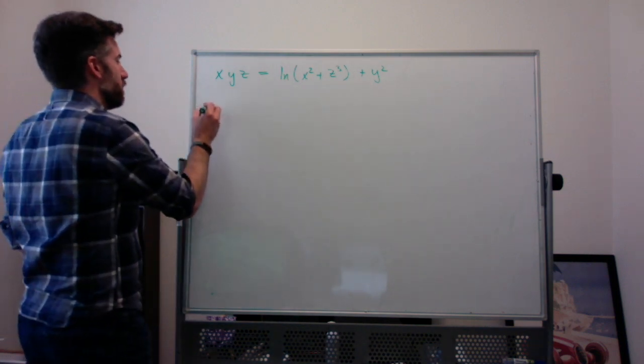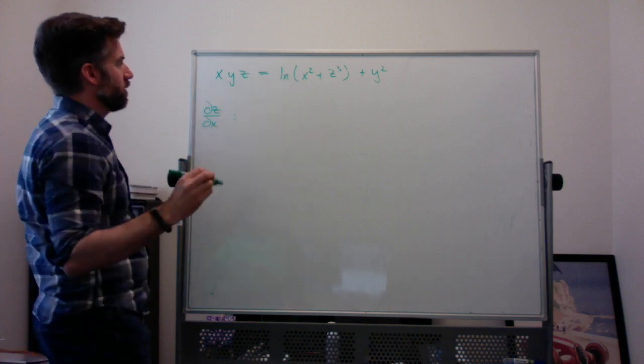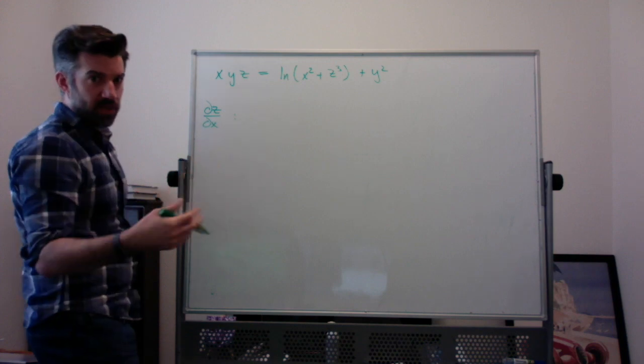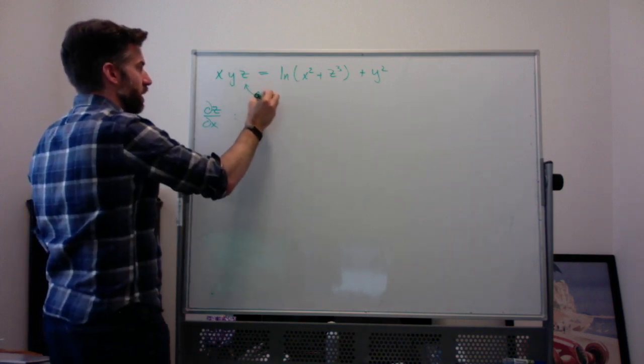So let's do ∂z/∂x. The idea here is that x and y are both independent variables, but z is a function of x and y.